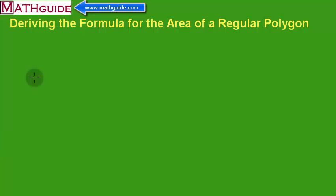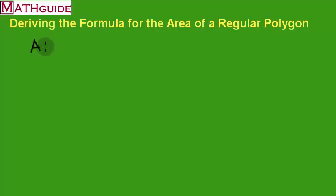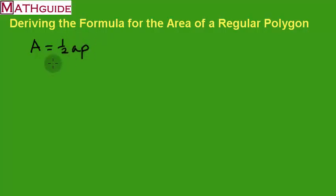This is MathGuide.com. My name is Mark Karadimos, and today we're going to talk about how to derive the formula for the area of a regular polygon. Math teachers talk about the formula, and the formula that they often say is: the area is equal to one-half the apothem times the perimeter of the regular polygon. I'm going to talk about where this formula comes from.